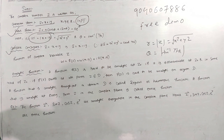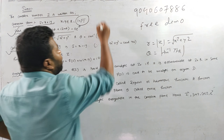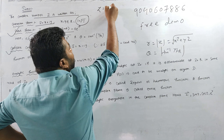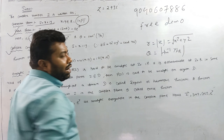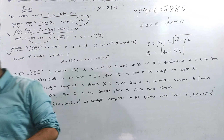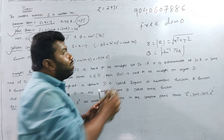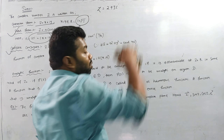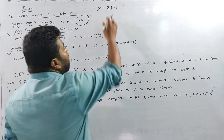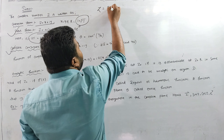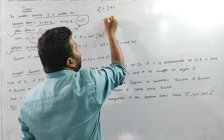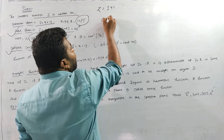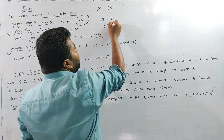Next, complex conjugate. Consider the complex number Z equal to 1 plus i. Here A is equal to 1 and B is equal to 1, since Z equals A plus iB. So A equals 1 and B equals 1.